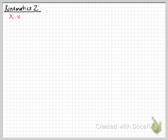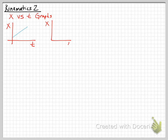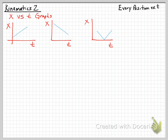Today we're going to start kinematics two, beginning with position versus time graphs. Our first graph will show a positive slope, our second will show a negative slope, and the third will show a change between the two where the slope goes negative and then positive. That way we can see the difference between a few of them — there are several other examples we could do, but these are just a couple.